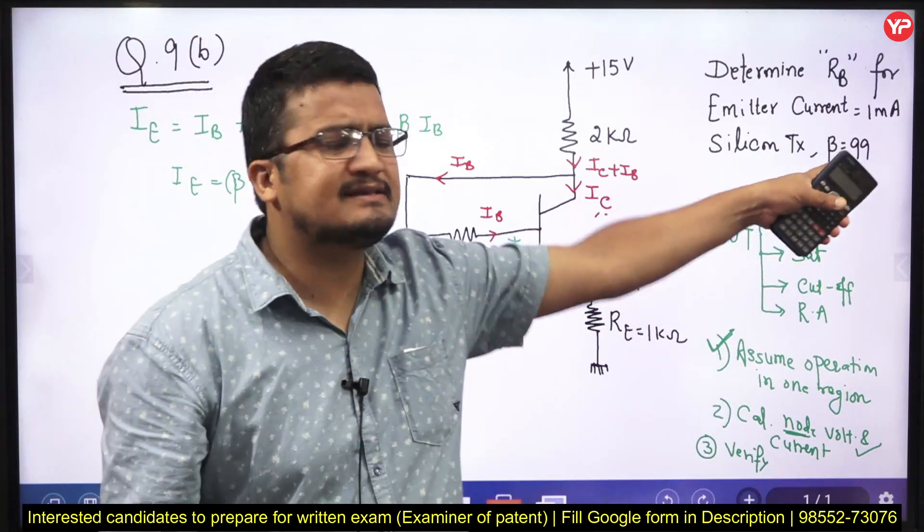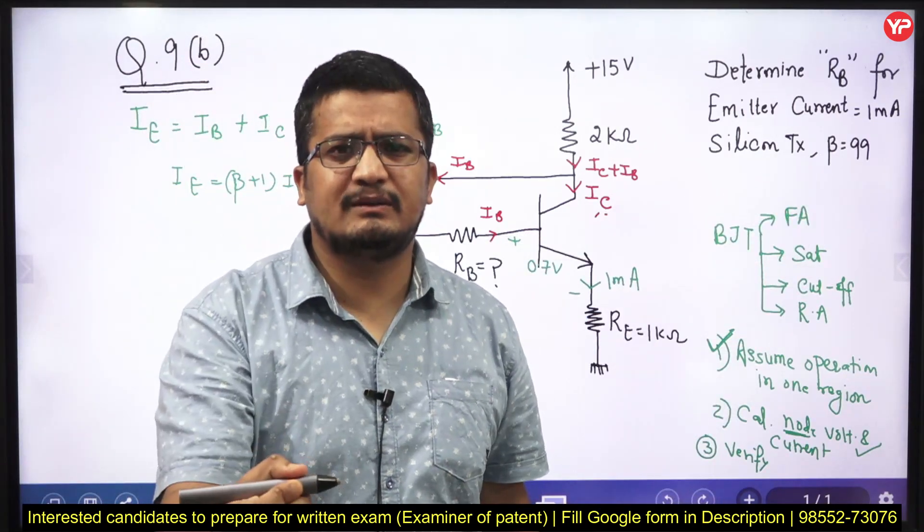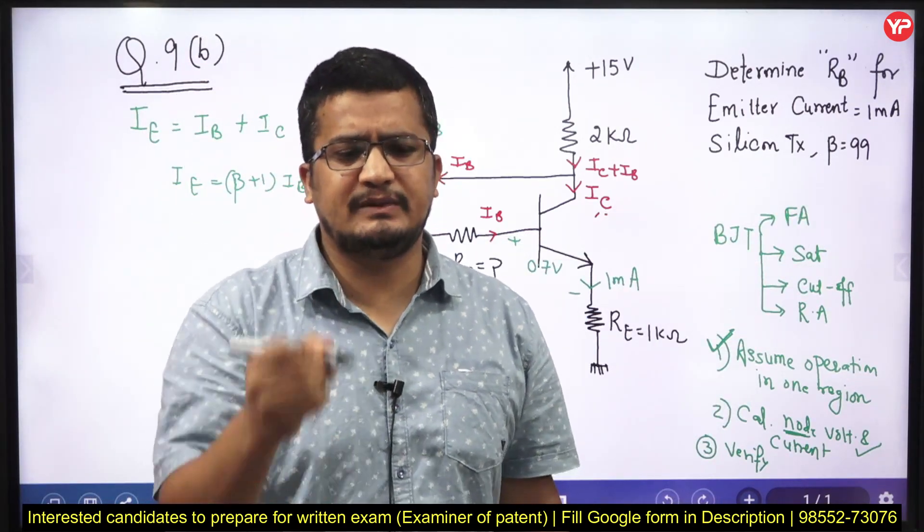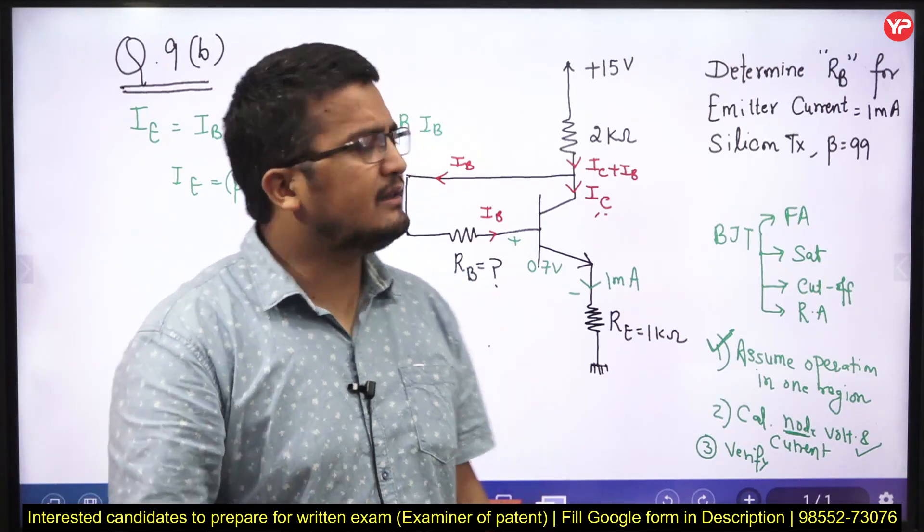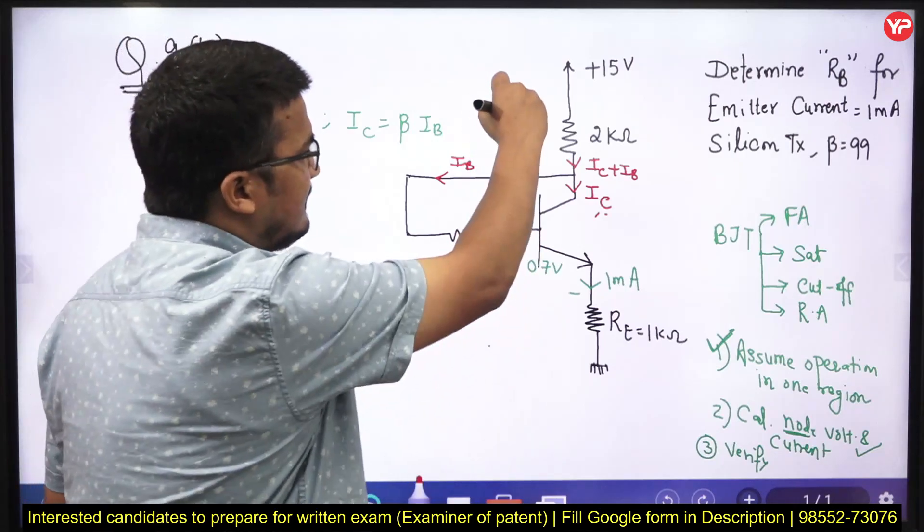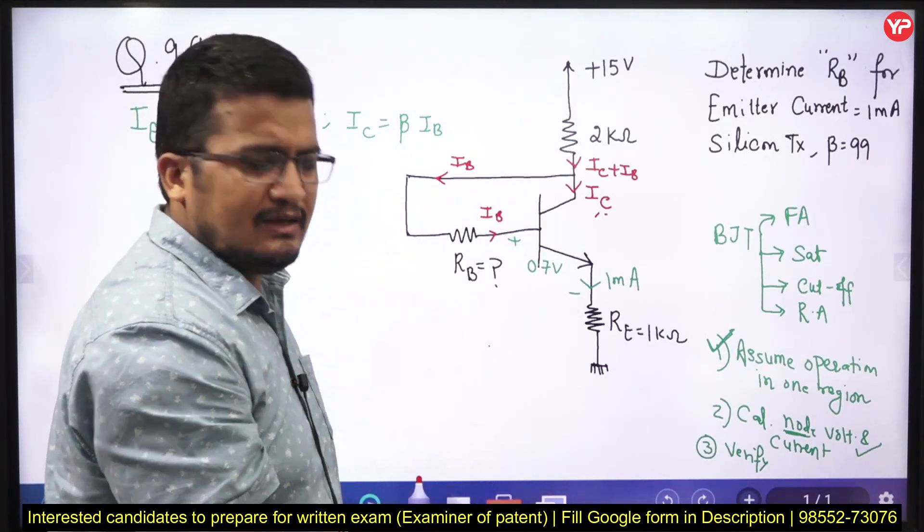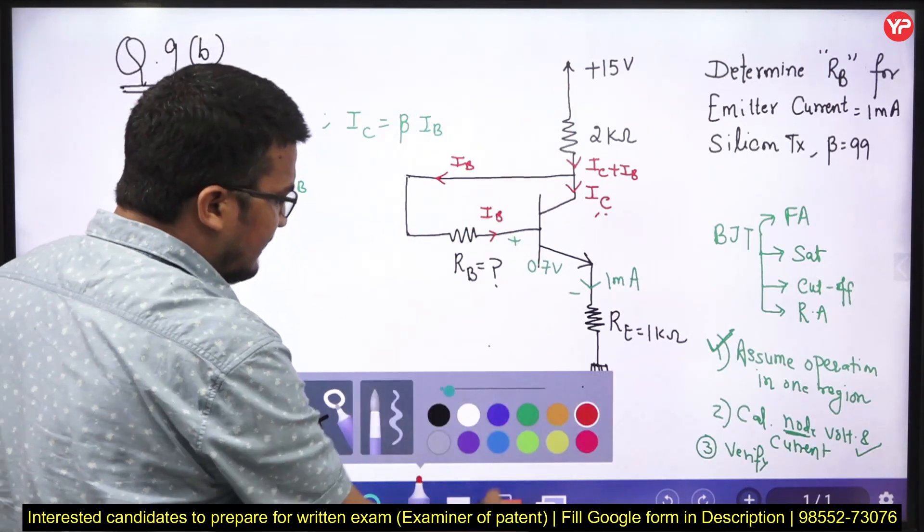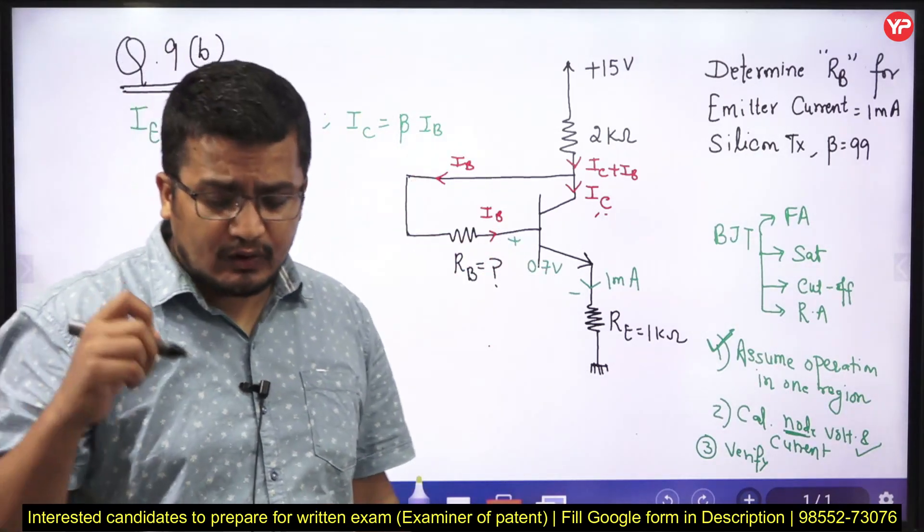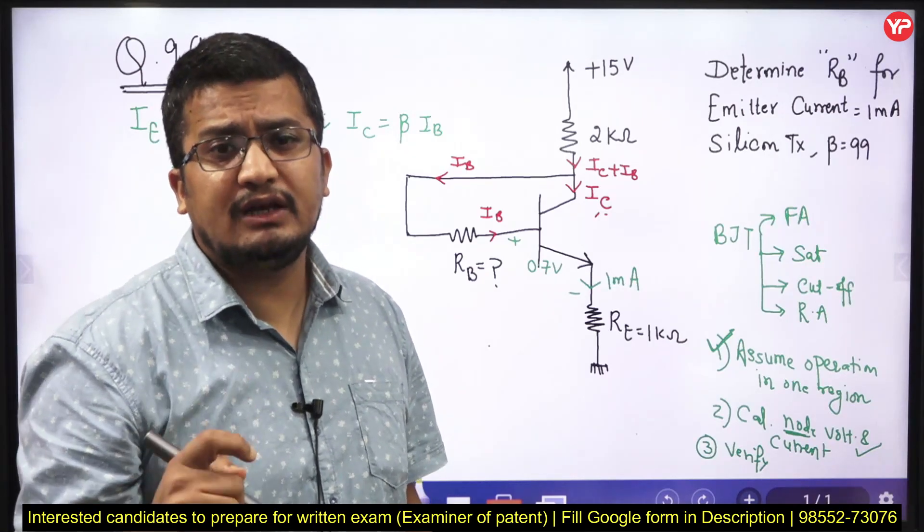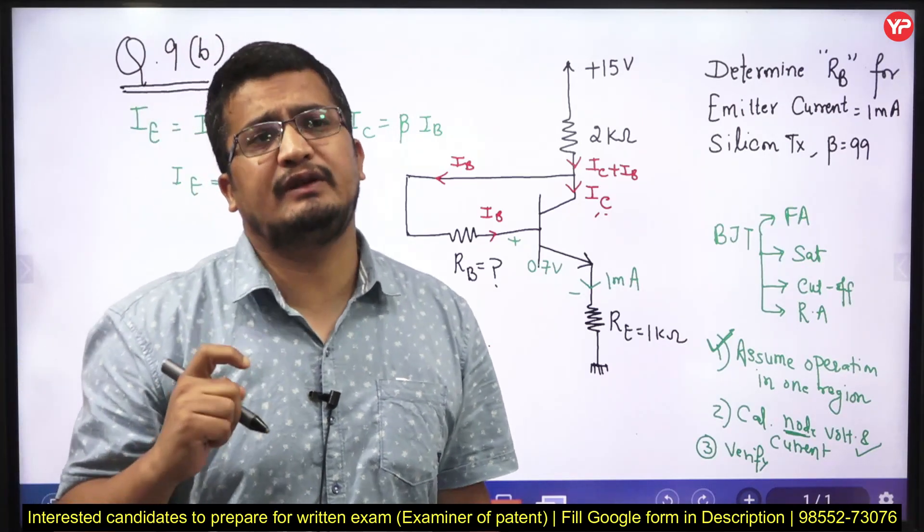Beta is 99. Some students can do it in the approximation way. Beta is very high, we can approximate IE is equal to IC. But when you are writing the conventional question, be it very clear, do the exact analysis. Now there is one other tip which I want to share with you people.